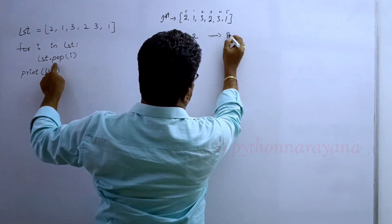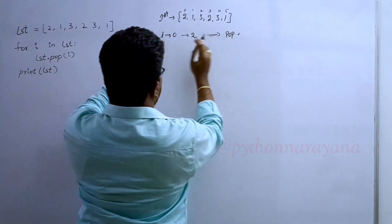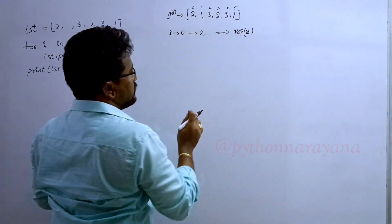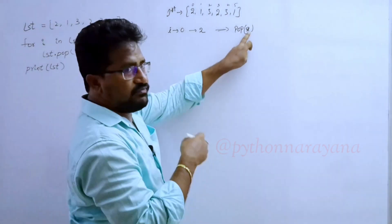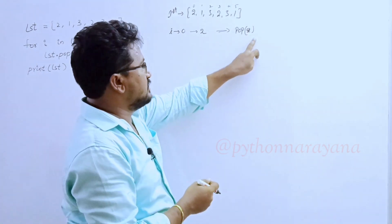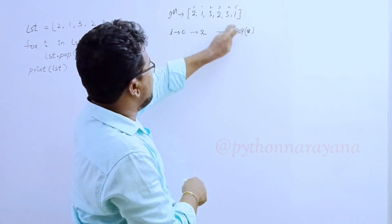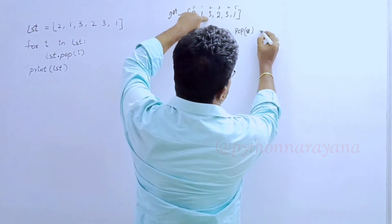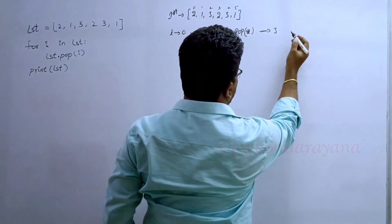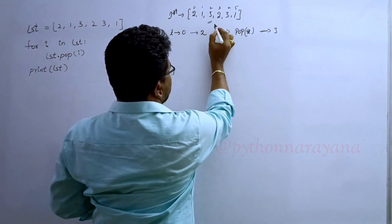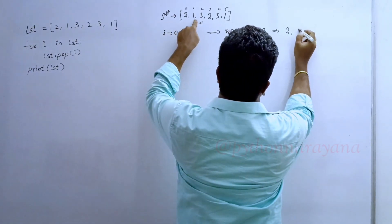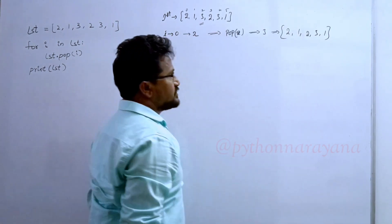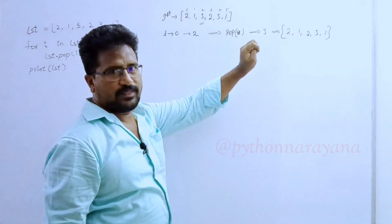Now, what is there? Pop of i. i means 2. So pop(2). In the pop function, whatever number we pass, it takes as index number. So it takes 2 as index number and wherever index number 2 is, that element it will delete. That means 3 will be deleted. After 3 is deleted, the remaining list is 2, 1, 2, 3, 1.